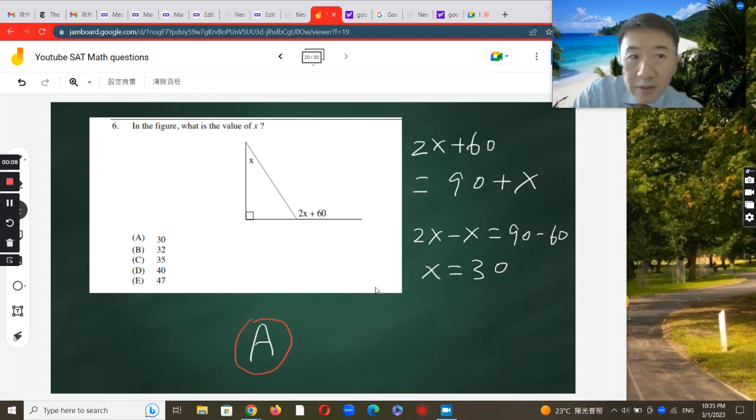Let's work on an SAT math question. You have a right angle triangle here, this is angle x, and the exterior angle is 2x plus 60. They want to know what is the value of x. Well, that's simple enough.